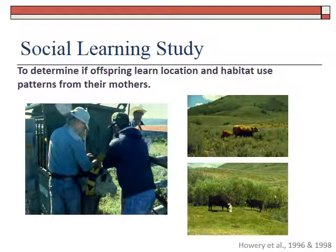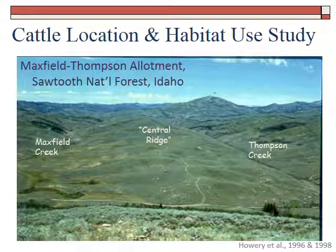An important social learning study first helped us think about how cattle learn appropriate habitat behavior. This work was done by Larry Howery right here in Idaho, along with Fred Provenza and Dave Belff. Larry wanted to determine if offspring learned locations and habitat use from their mothers. The study was done in the Sawtooth National Forest on an allotment where ranchers had noticed a central ridge dividing the allotment — one set of cattle always on the Maxfield Creek side and another on the Thompson Creek side. Maxfield Creek had a broader riparian area, so those animals tended to hang out there. Larry's job was to see if cattle were really consistent from year to year.